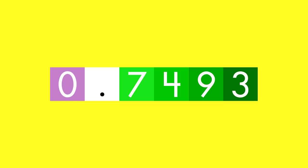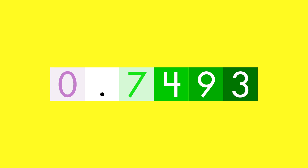To round to the nearest whole number, look at the digit to the right. Since it is greater than five, round up.